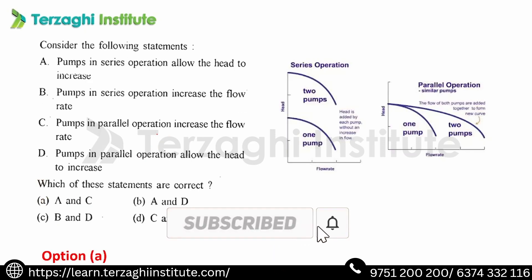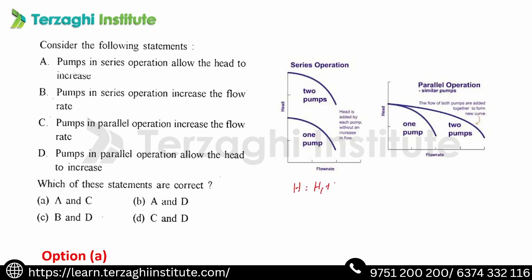Consider the following statements. Pumps in series operation allow head to increase. Pumps in series operation increase the flow rate. Pumps in parallel operation increase the flow rate. Pumps in parallel operation allow head to increase. In the first picture, pumps are attached in series — the head is additive (H = H1 + H2) and discharge Q is constant.